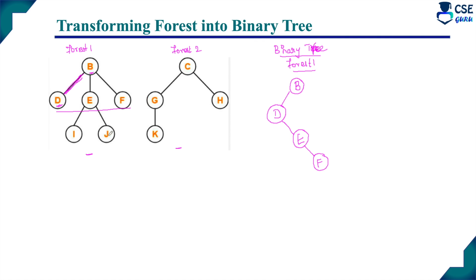Continuing: nodes I and J are present. E becomes the root node, I is the first left child of E, and I and J are siblings. So connect J as the right child of I. Same logic — first left child as left child, and its siblings connected towards right. This is the complete binary representation of forest 1.